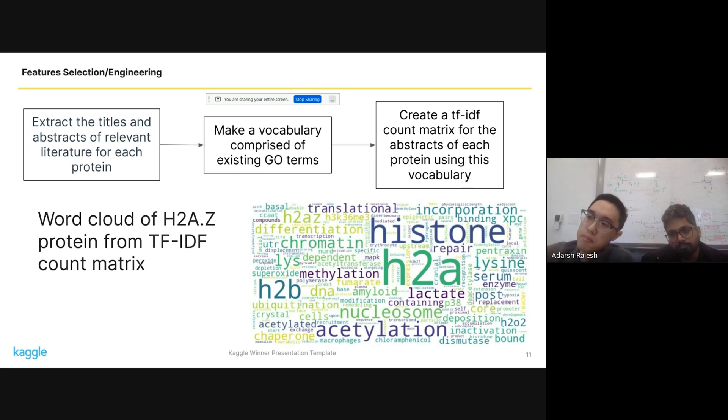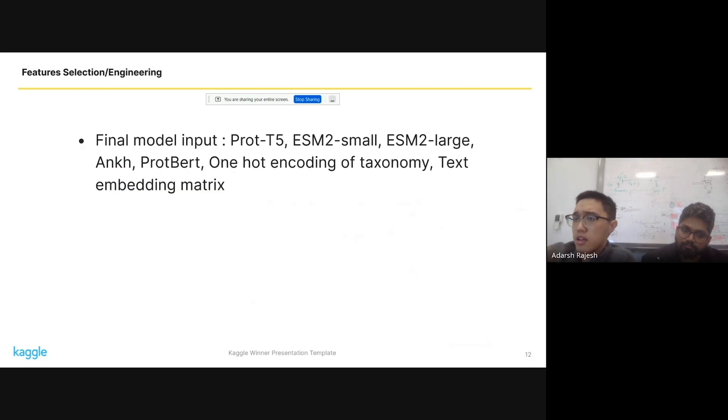So those are the two main inputs, protein embeddings, as well as text data. And one other thing that we also used was taxonomy, one-hot encoding. So the final model input are these various data sources. Obviously, some of the protein language models perform better on their own compared to others. ProtBert, I think, is generally known to perform the least effectively among all these PLMs.